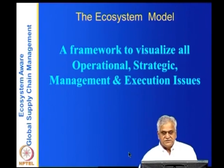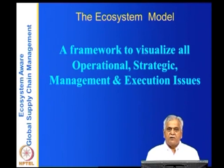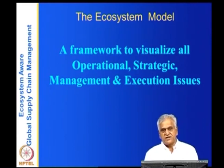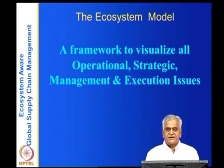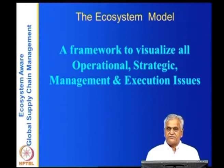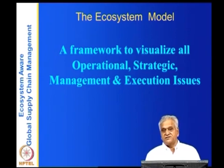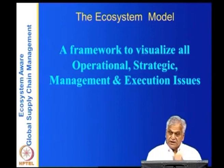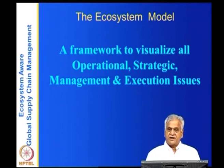So what is an ecosystem? It's a framework to visualize all operational, strategic, management and execution issues. It's important because, as we have seen in previous lectures, the supply chain is affected by extraneous factors — not just the suppliers, manufacturers, logistics providers, retailers and customers. In earlier studies, people talked about supply and demand matching as the most important thing. But the supply chain is also affected by location factors, environmental factors, government rules, regulations, and available infrastructure.